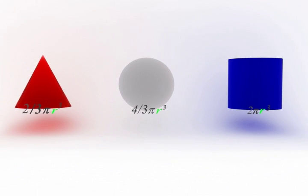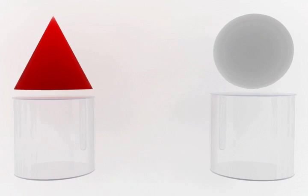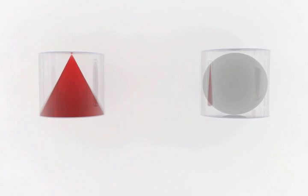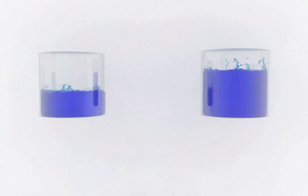Archimedes recognized the special relationship between these primitive volumes. The volume of the cone was equal to one-third of the volume of the cylinder. The sphere was equal to two-thirds of the cylinder. And when added together, the cone and the sphere precisely equaled the volume of the cylinder.